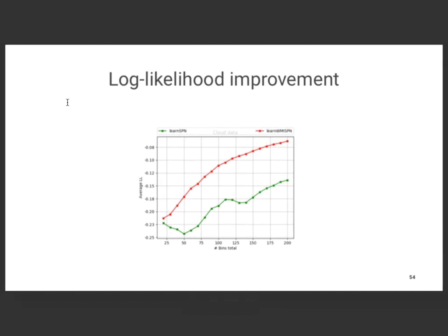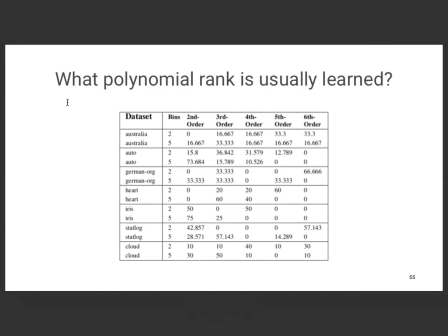Why do we need these polynomials? If you look at the log likelihood improvement: when you don't learn these continuous distributions, you get a poor fit. As soon as you learn polynomials, you get a really high log likelihood, meaning a very good fit for the data. So you can ask yourself: what degree of polynomials do we need? I said there's an upper bound on the number of degrees — should it be a hundred, a thousand, a million?